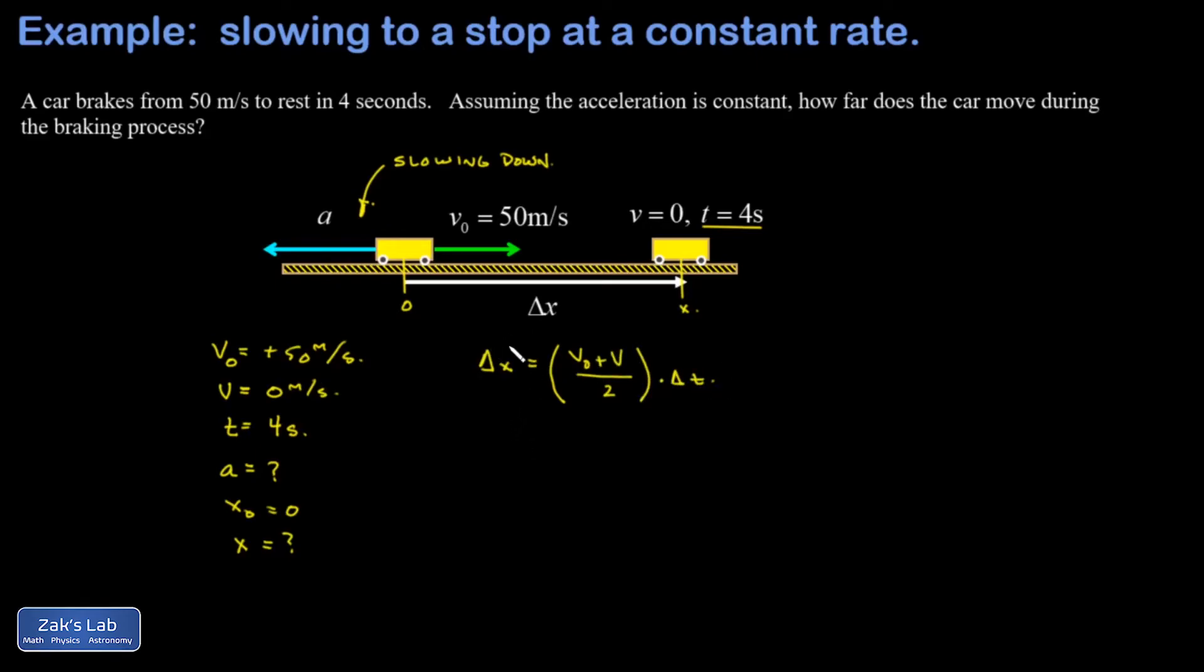Delta x is what we're after here. You can say delta x is the final x minus the initial, and that's just x the way I labeled it in my diagram because the initial position was zero. The average of my initial and final velocities is going to be 50 meters per second plus zero over two, so the average is 25 times how much time has gone by, four seconds. 25 times four, that's 100 meters, and we're done.